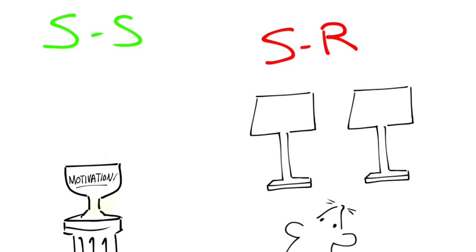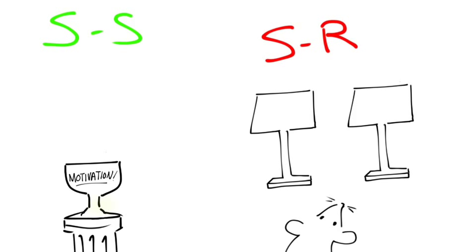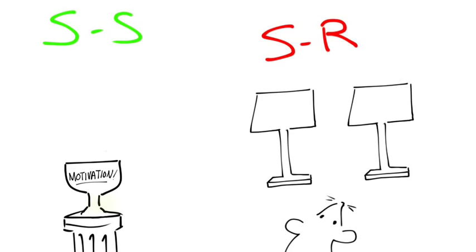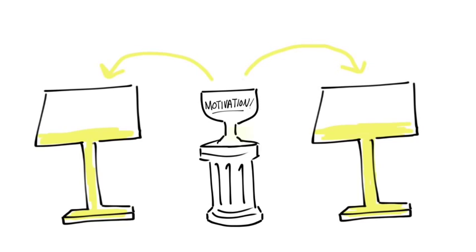However, the SR association, the one that drives the right and left lever-pressing, is totally intact. Remember, the SS and SR associations are independent of each other. So although their general motivation is down, the rats haven't learned that left lever is less desirable than the right. If two-process theory is right, the rats should decrease their lever-pressing in general, but they won't show any preference for one lever or the other.